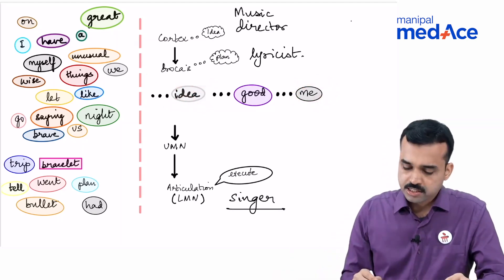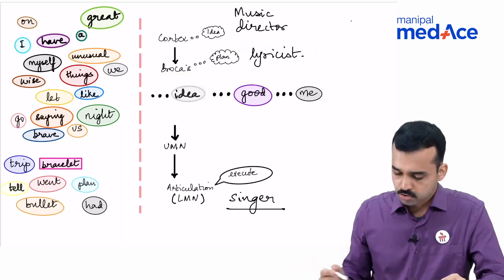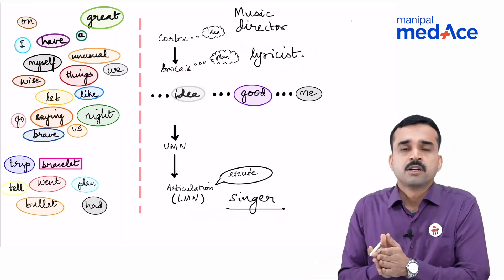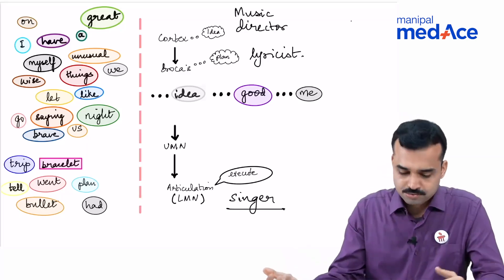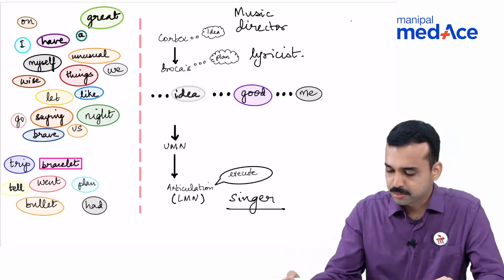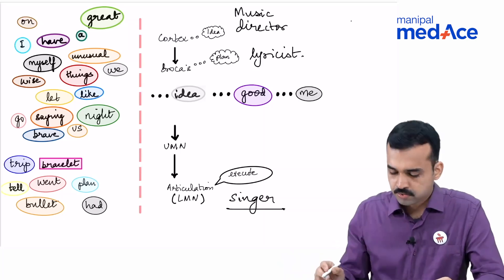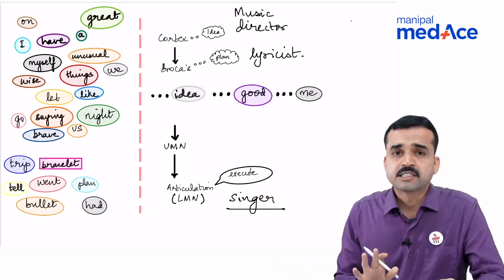Because the Broca's area has gone missing, the lyrics of the song have gone wrong. And therefore the song coming out will also be like 'Selfie Lely Mene,' something like that. So basically this is what happens in Broca's aphasia.